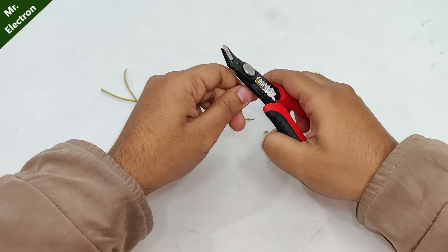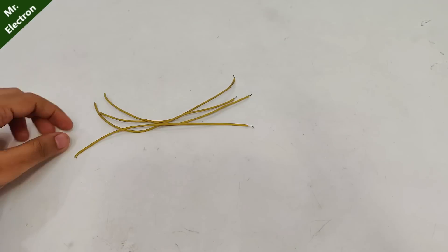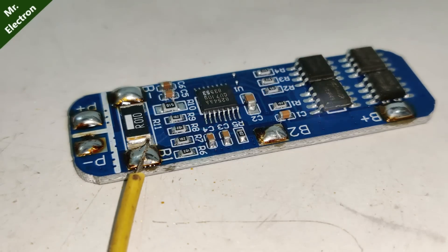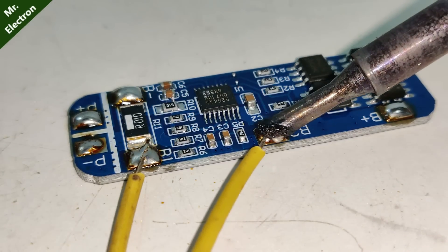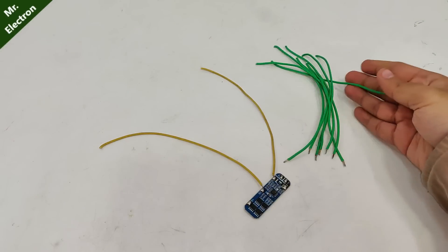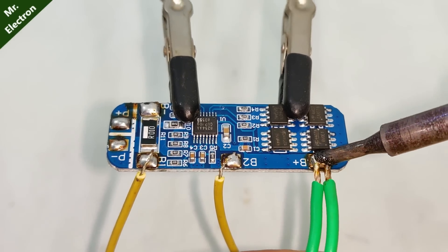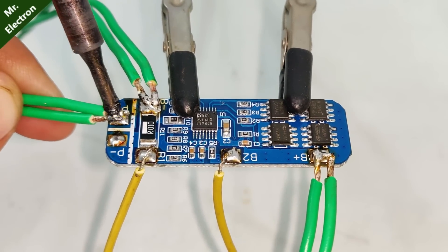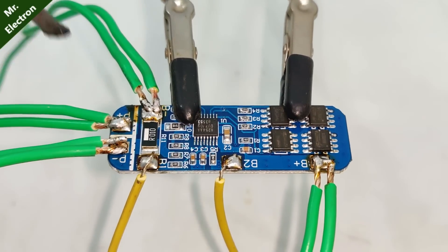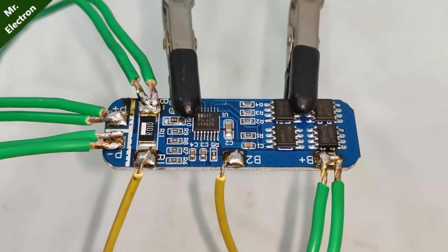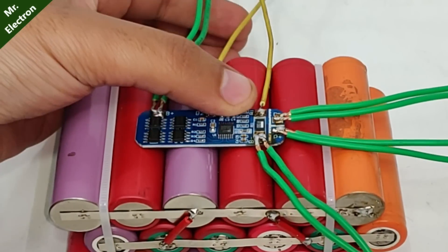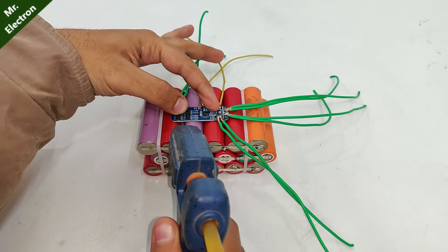Next take a long wire and cut it into four equal parts. Strip it only on one side. Take two of these wires and connect them to B1 and B2. Eight more wires, two of which will be connected to B plus, same to B minus, and same to P plus and P minus. The BMS wiring is finished. Now let's connect it to the battery. Place the BMS in the direction as shown and glue it with your glue gun.